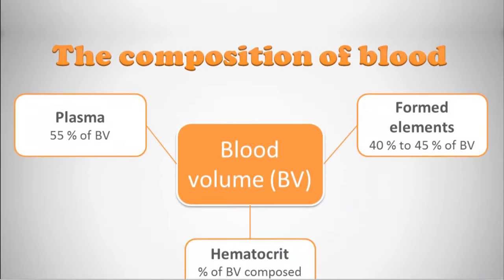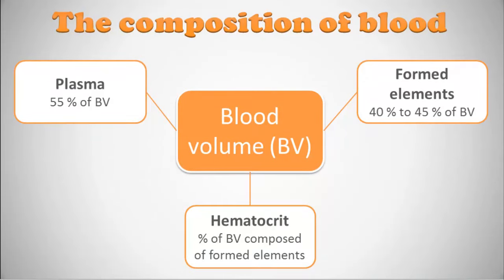The first thing — let's talk about the composition of blood. When we're talking about a unit of blood volume, if we were to draw blood out of you and put it in a vial, that's your blood volume. It's composed of plasma, which is about 55% or a little more than half, and then formed elements — all the thick stuff, the molecules, particles, and compounds — which should be less than half, around 40% to 45%.